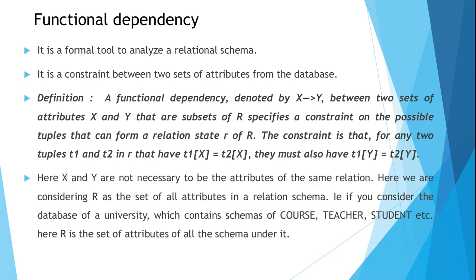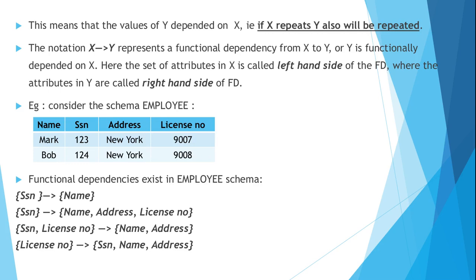Simply put, if X is repeated then Y will also be repeated — that property is called a functional dependency from X to Y, where X and Y are two sets of attributes. This means the values of Y depend on X. In the X→Y notation, the set of attributes in X is called the left-hand side of the FD, and the attributes in Y are called the right-hand side.